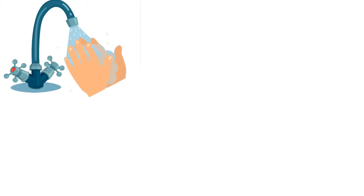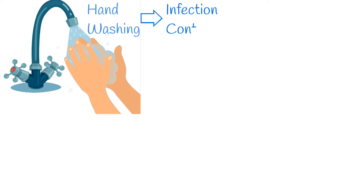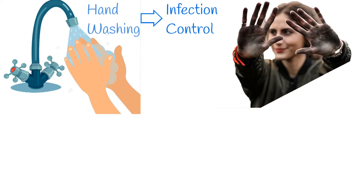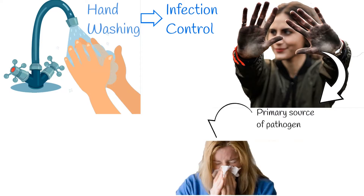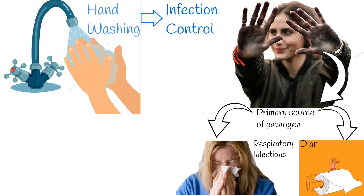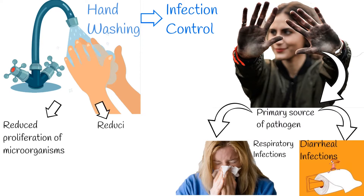Hand hygiene is now regarded as one of the most important elements of infection control activities. Contaminated hands are a primary source of pathogen spreading, especially for respiratory and diarrheal infections. Proper hand hygiene decreases the proliferation of microorganisms, thus reducing infection risk. According to the CDC, hand hygiene is the single most important practice in the reduction of the transmission of infection in the healthcare setting.